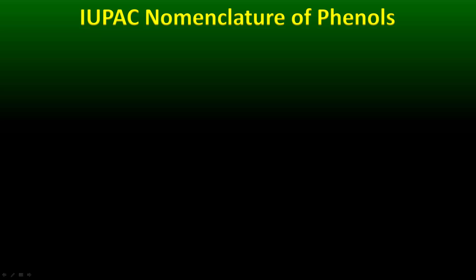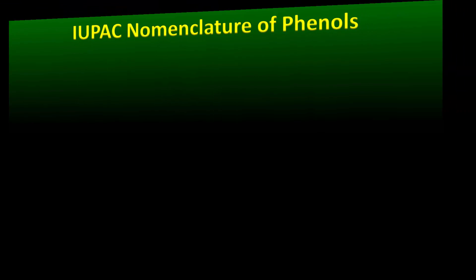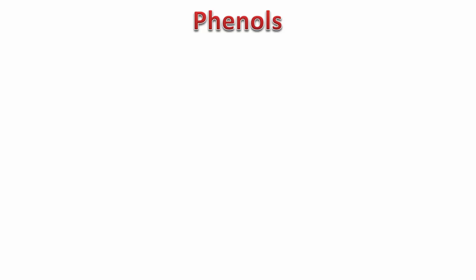Hello and welcome to this video on the IUPAC nomenclature of phenols. We need to first understand what phenols are. We have a benzene ring with an OH group attached. You can assume phenol to be an aromatic version of alcohol.